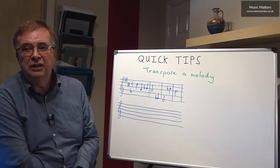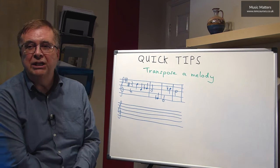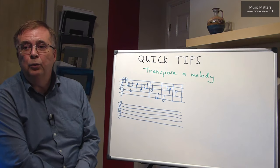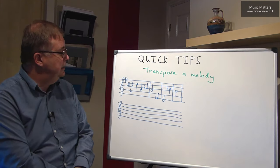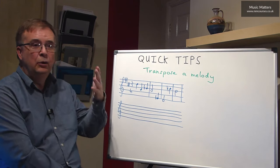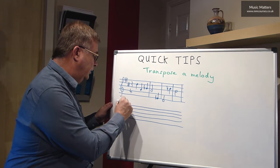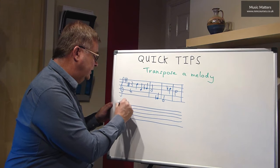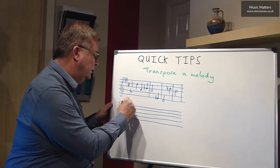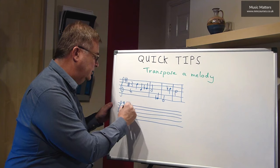When you're transposing, you might as well just think in major keys. It won't really matter whether your piece is in a major key or a minor key. Two sharps means we're in D major. We're going up to E major, so we need a key signature for E major. The first job: transpose the key signature.